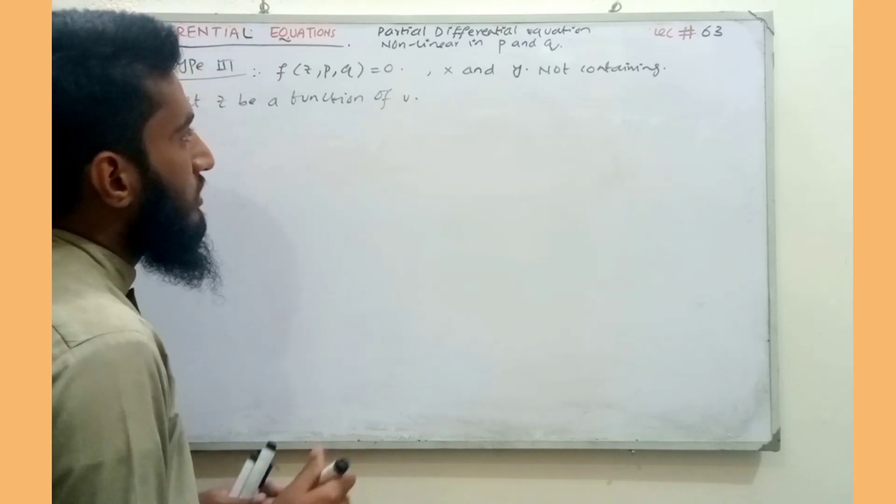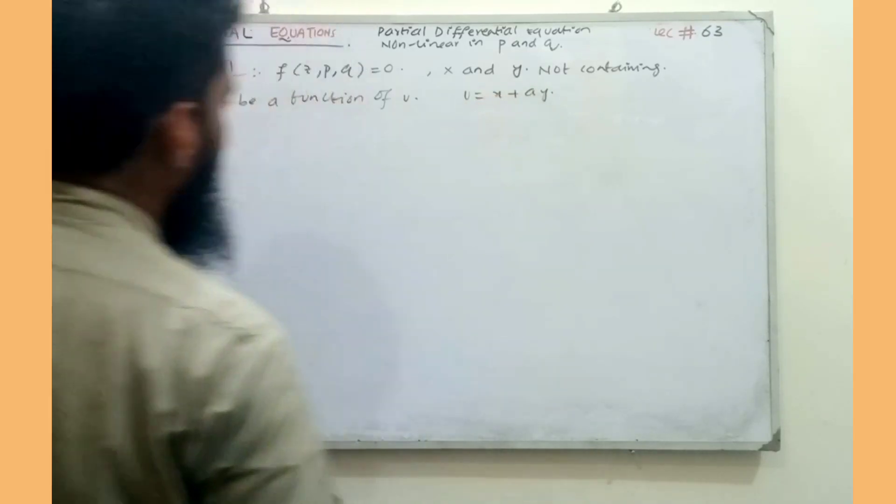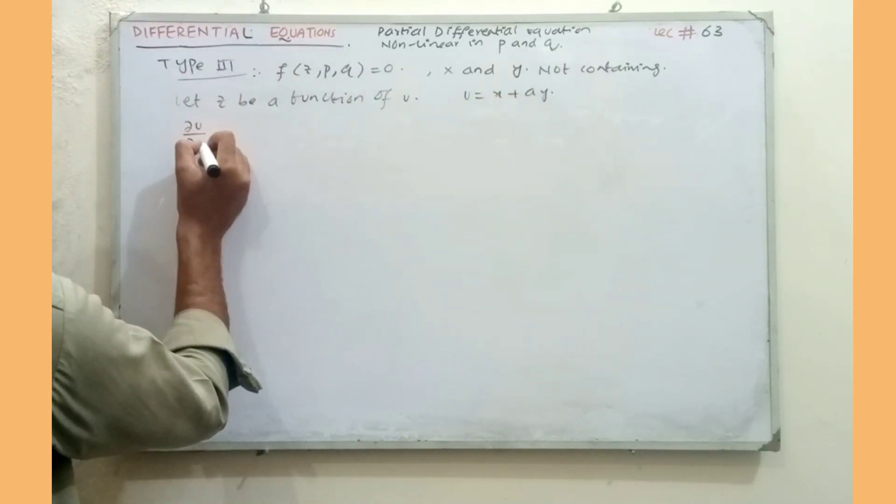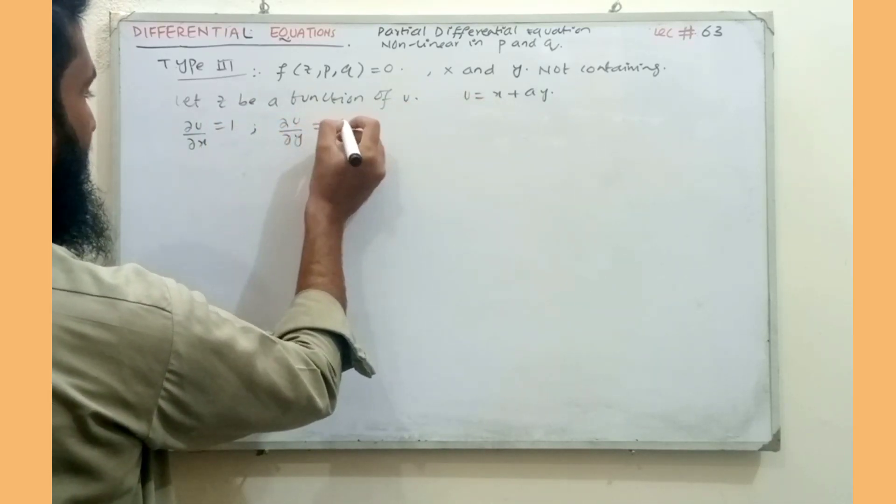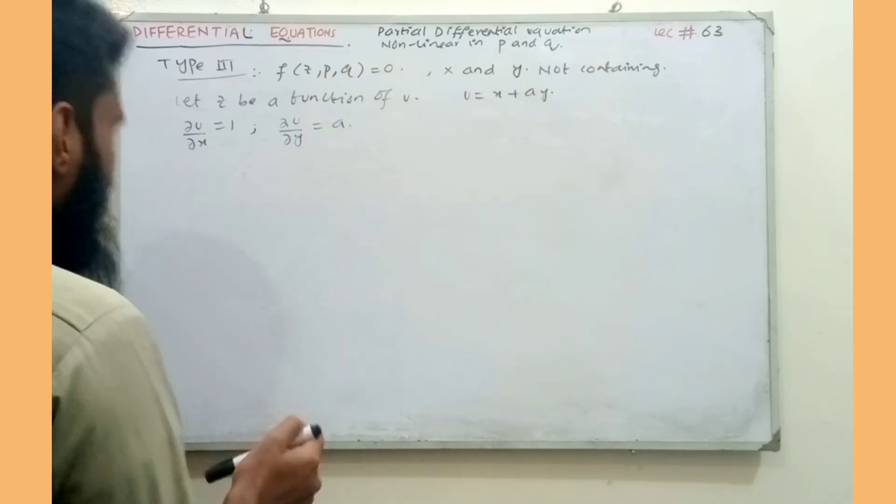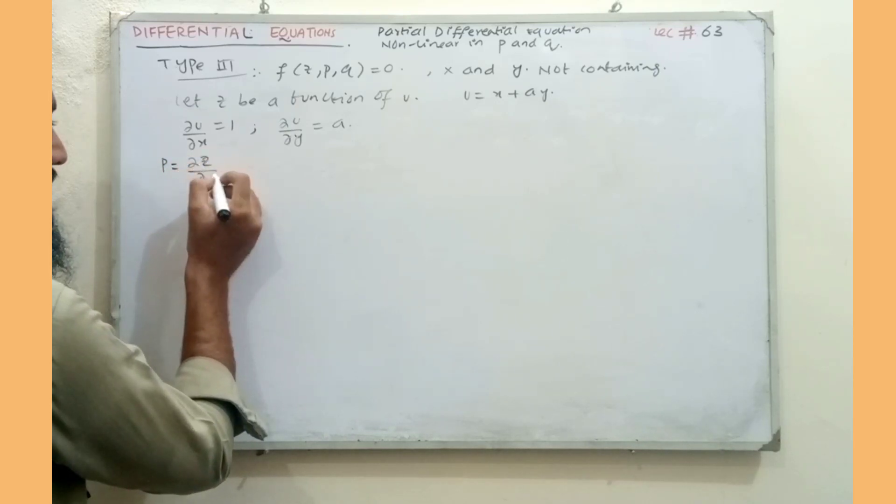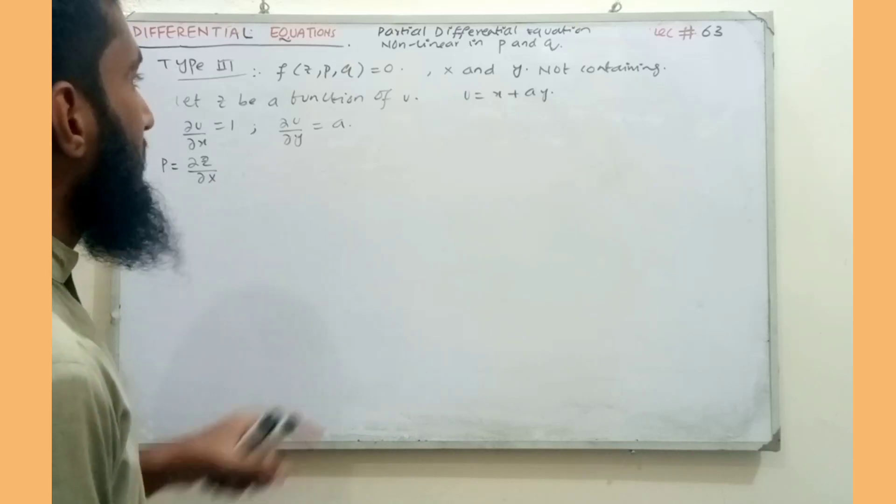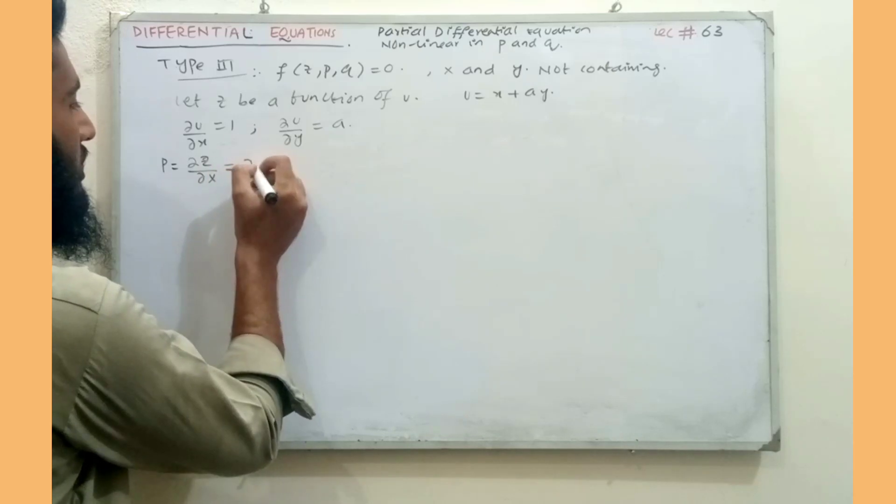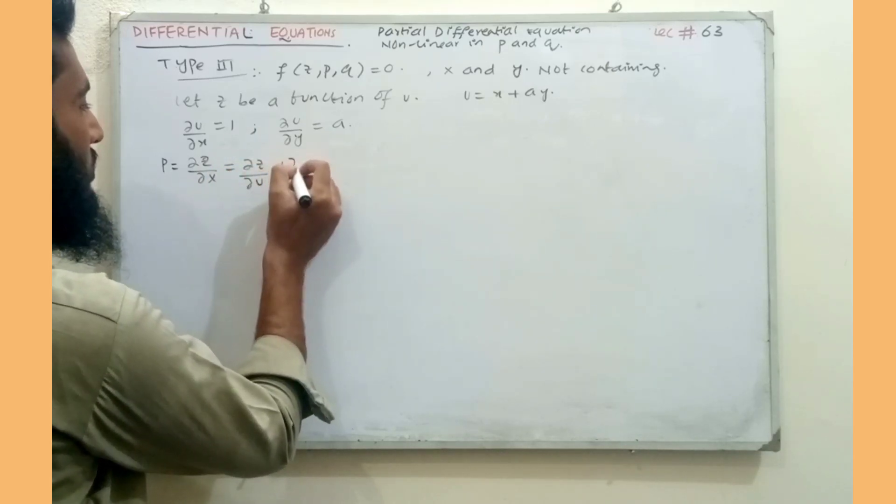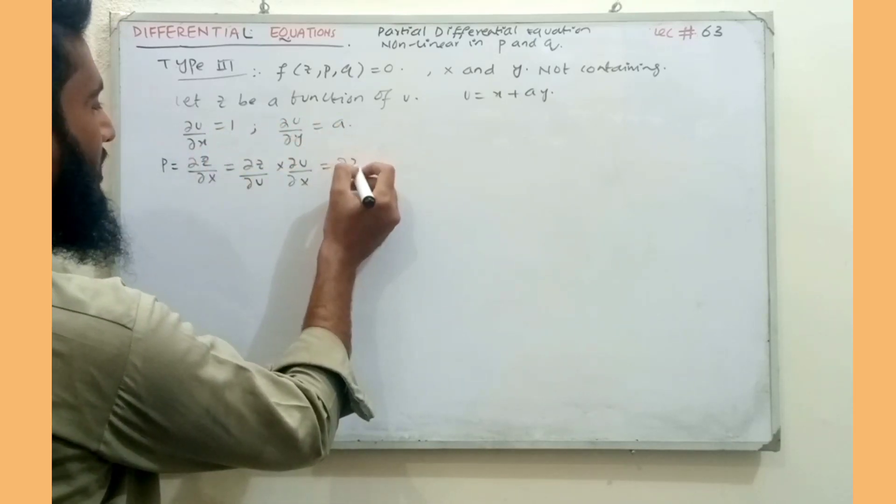The partial derivative of u with respect to x, partial u by partial x will be one. Small p, which is partial z upon partial x, since z depends on u, we can write partial z upon partial u into partial u upon partial x. The value of partial u upon partial x is one, so this gives partial z upon partial u.